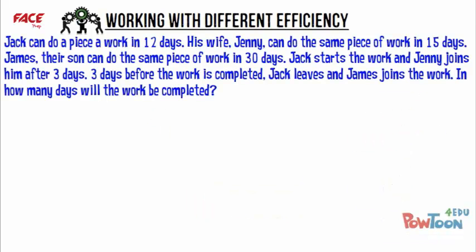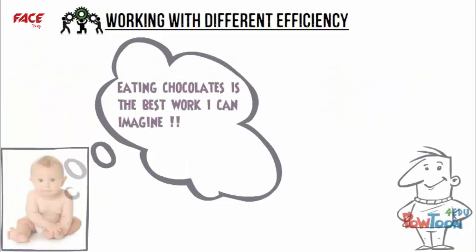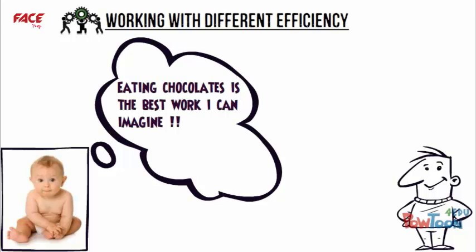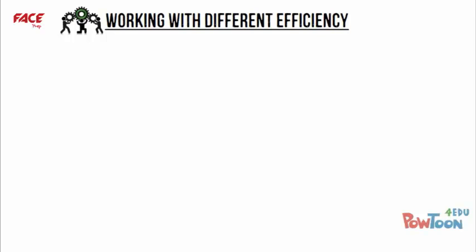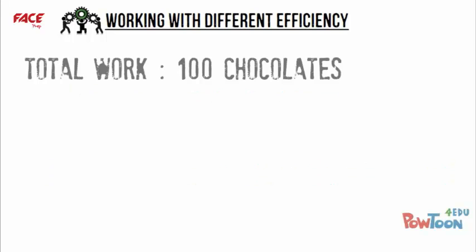Observe the earlier question carefully. The question speaks of a certain piece of work but the nature of work or the amount of work to be done is not specified. Let us assume that the work to be done is the eating of chocolates — because it is easy to imagine and who doesn't like chocolates? The first step in the process is to assume the amount of work to be done, which is nothing but the number of chocolates to be eaten. So let's assume that 100 chocolates have to be eaten.